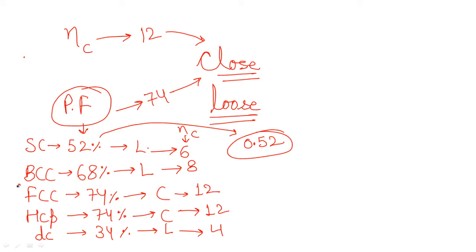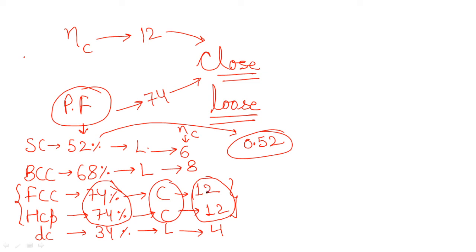So, FCC and HCP have a packing fraction meeting the closed packed condition, as well as a coordination number meeting the condition. Both conditions are satisfied for FCC and HCP, so you can say these are closed packed structures. You can expect direct exam questions asking you to find the packing fraction value, select the correct value from options, or identify which structure is closed packed or loose packed.